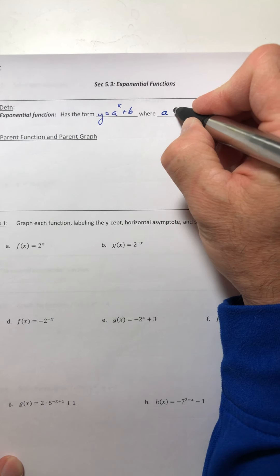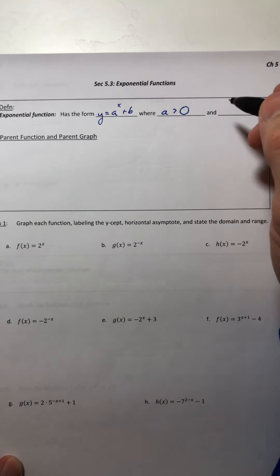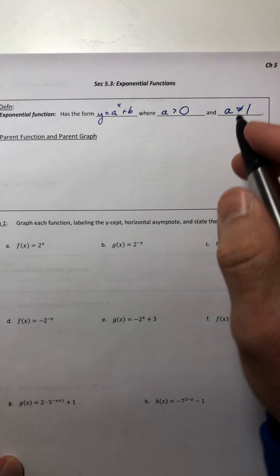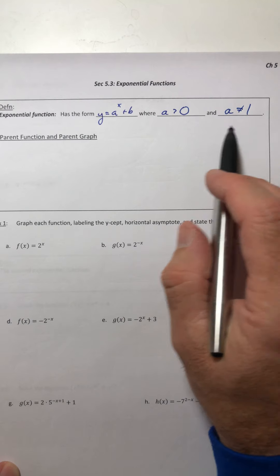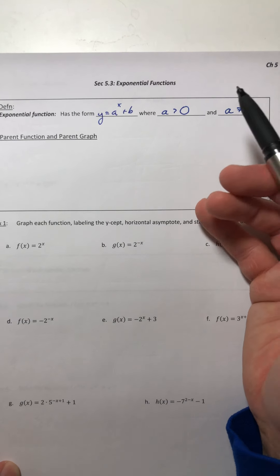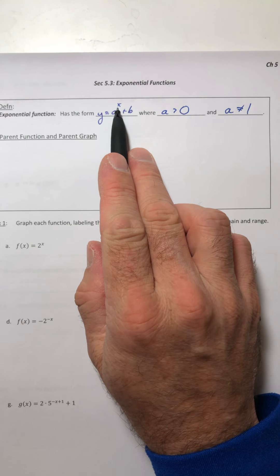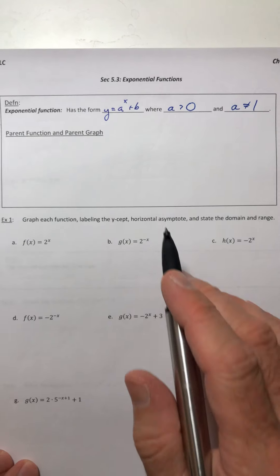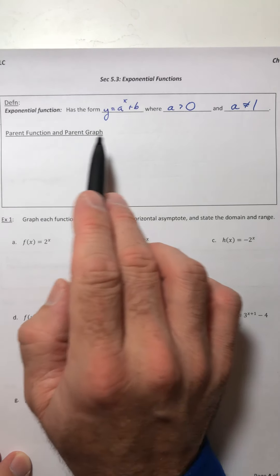Where a is greater than 0, so the a is positive, and a is not equal to 1. What makes it exponential versus a polynomial is your variable is now up in your exponent, as opposed to where the a is, which is called the base.